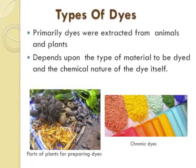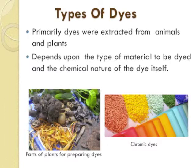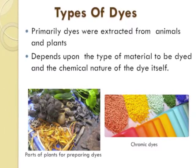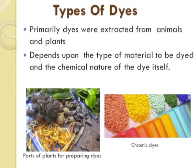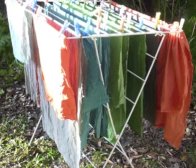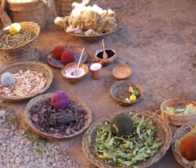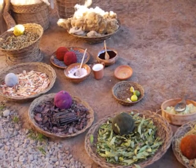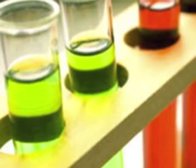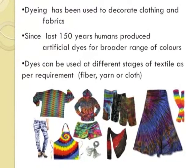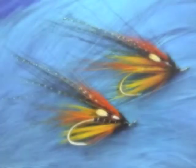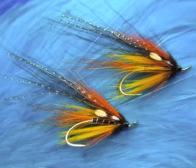Types of dyes: dyes are classified based on the products to which they are applied and the nature of each type. For thousands of years, dyes have been used by man to decorate his clothing or fabrics. The primary source of dyes has been nature, with dyes extracted from plants, animals, or minerals. In the last 150 years, man has produced chemical dyes to achieve brighter and a wider range of colors. Different classes of dyes are used for different types of fibers and at different stages of textile production processes.